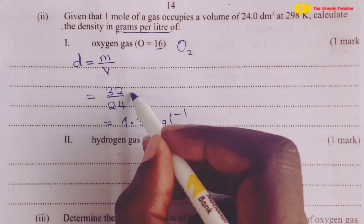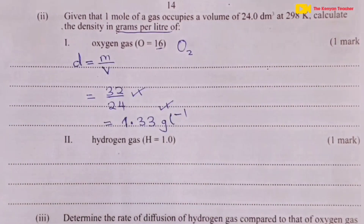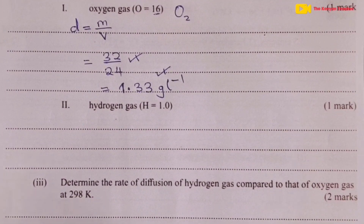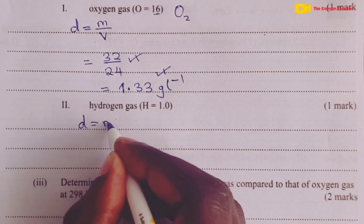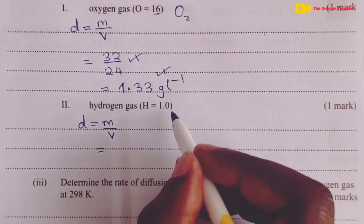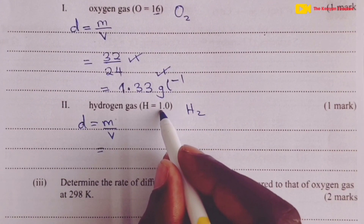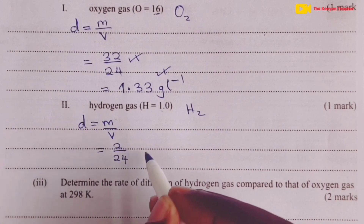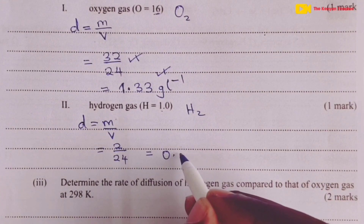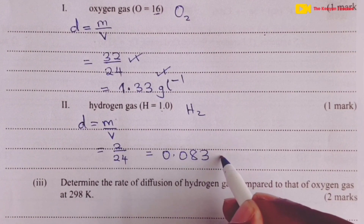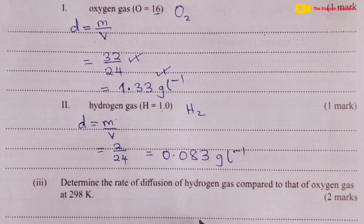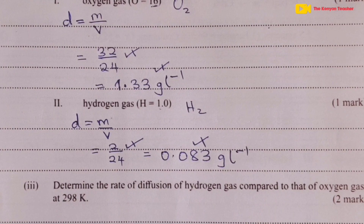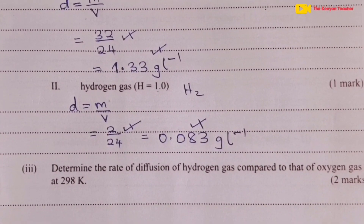That earns one mark: half for the division and half for the answer. For hydrogen, H2 has molar mass 1×2 = 2 g/mol. Density = 2/24 = 0.083 g/L — again in grams per liter as required. Half mark for the division and half for the answer.